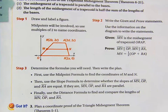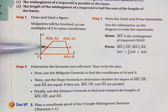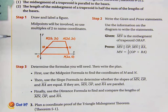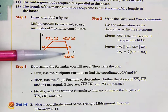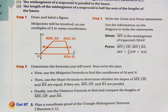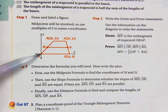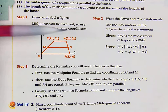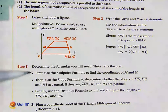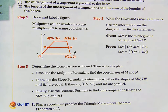Step three is to determine what formulas you'll need to write your proof. First, you find the coordinates of M and N using the midpoint formula. Then, to prove they're parallel, you find the slopes of MN, RA, and OP and show they're equal. Next, to show MN equals half the sum, you use the distance formula to find the measures of MN, OP, and RA, and verify that MN equals half of OP plus RA. These proofs are fairly long — you've got to find midpoints, slopes, and distances.